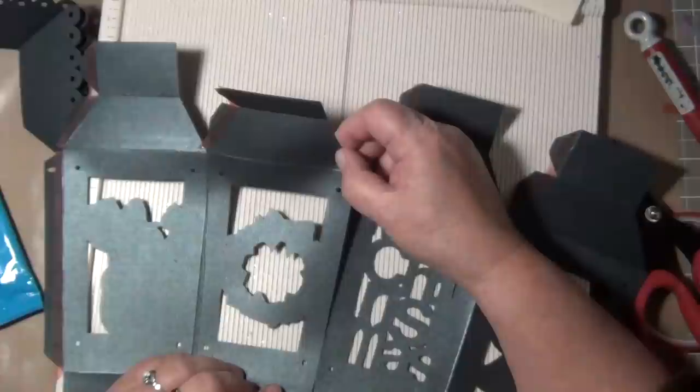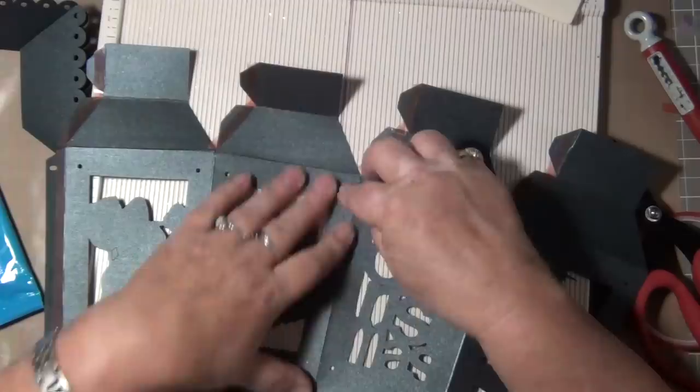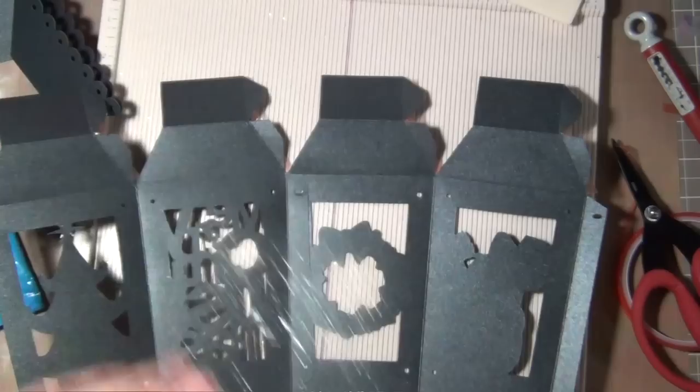Remove the adhesive, attach the Merry Christmas side to the wreath side, aligning the holes. And pressing securely so they have a nice strong hold.